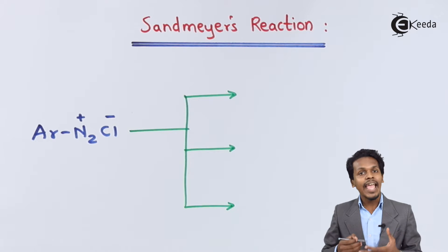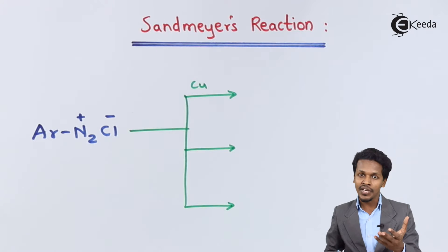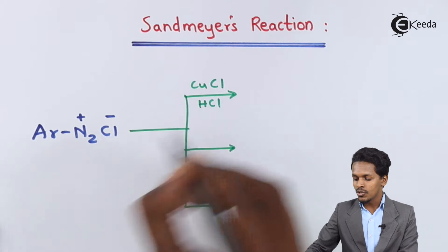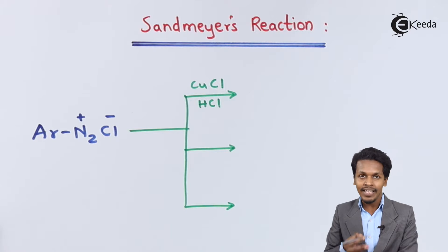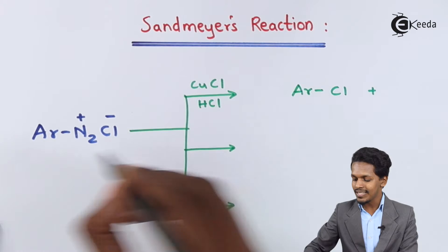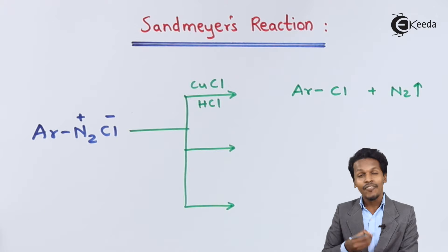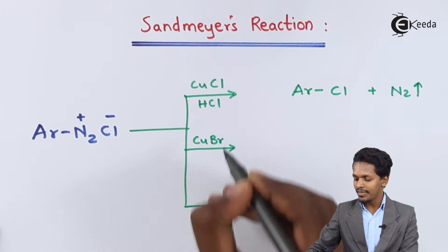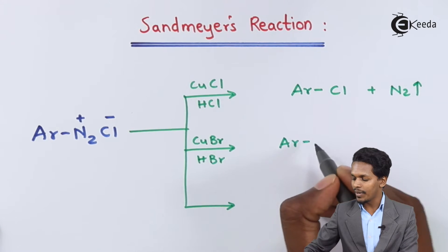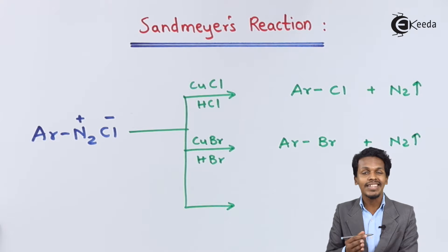Suppose if we have to prepare aromatic chloride, we have to use cuprous copper, which has an oxidation state of one. So we will use CuCl along with HCl. The product we get is an aromatic chloride, and the nitrogen is removed as a by-product. Similarly, if we are using cuprous bromide in the presence of HBr, the product we get is an aromatic bromide, with N₂ evolved as a gas by-product.